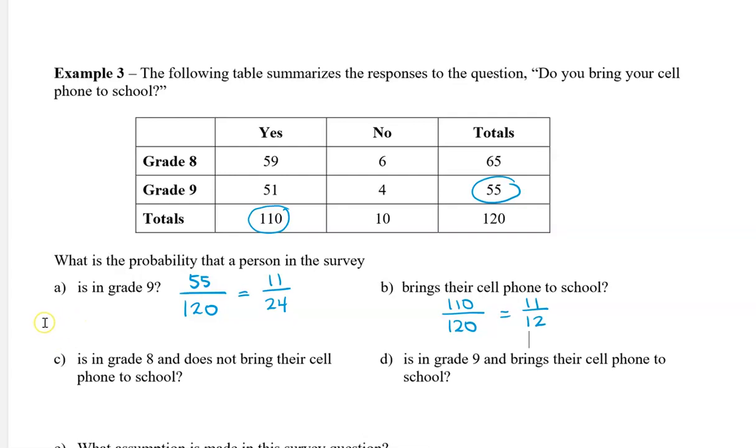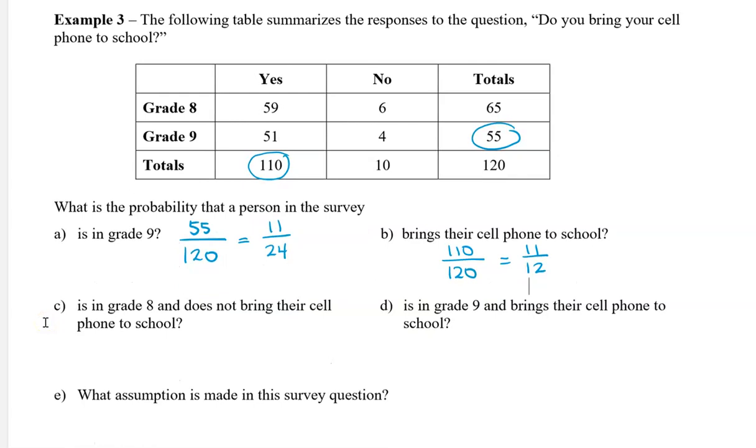Next, what's the probability that a person in the survey is in grade 8 and does not bring their cell phone to school? Being in grade 8 and not bringing their cell phone, we can see that there are 6 people. So this would be 6 out of 120. We can divide the numerator and denominator by 6 to get 1 out of 20.